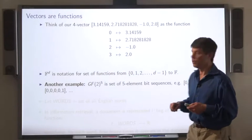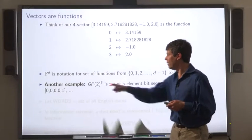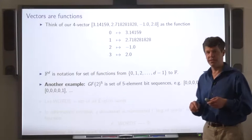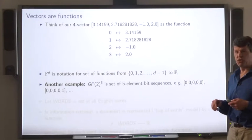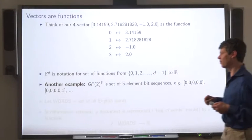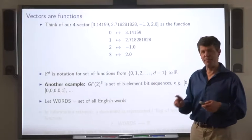F to the D is notation for the set of functions from 0 through D minus 1 to F. Here's another example using the field of GF2. GF2 to the 5 is the set of all five element sequences made up of zeros and ones. So for example, 0, 0, 0, 0, 0.